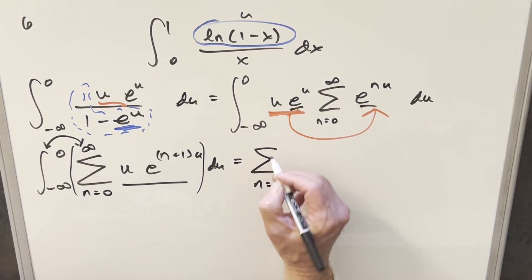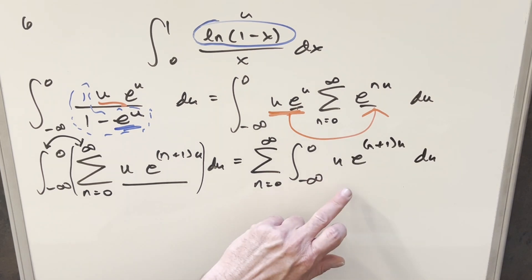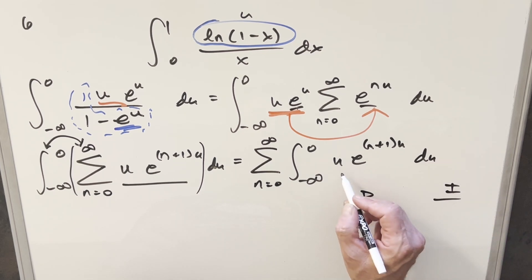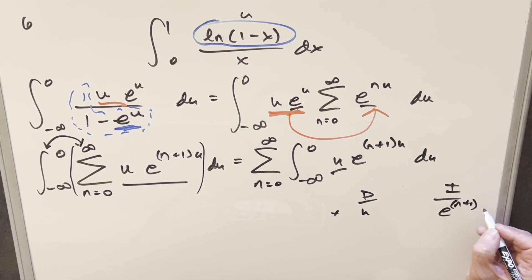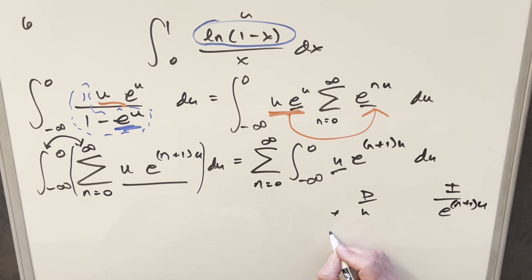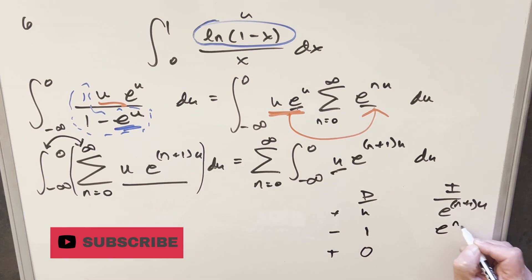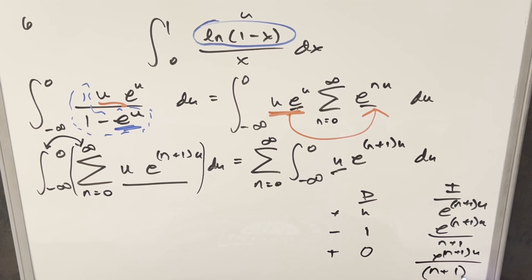We have the sum on the outside and just need to integrate u times e to the (n plus 1)u. We use the DI method — tabular integration — differentiating u because its derivative goes to zero quickly. Derivative of u is 1, then 0. Integrating e to the (n plus 1)u gives e to the (n plus 1)u over (n plus 1), then over (n plus 1) squared.